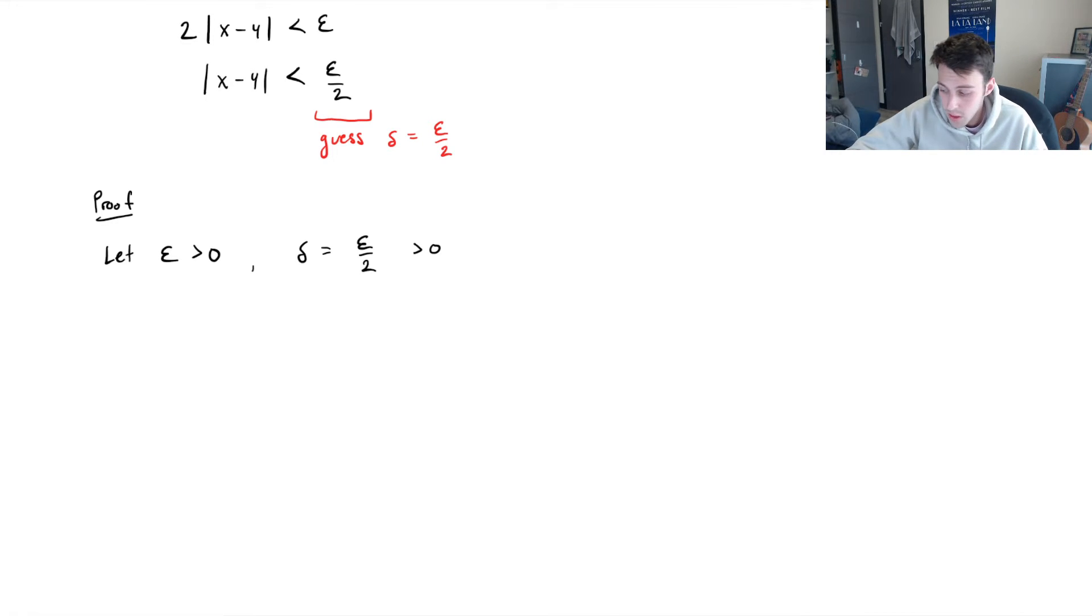Next, what we're going to do is make an assumption. What we're going to do is assume that absolute value of x minus 4 is less than delta, which is epsilon over 2, right? From our guess.